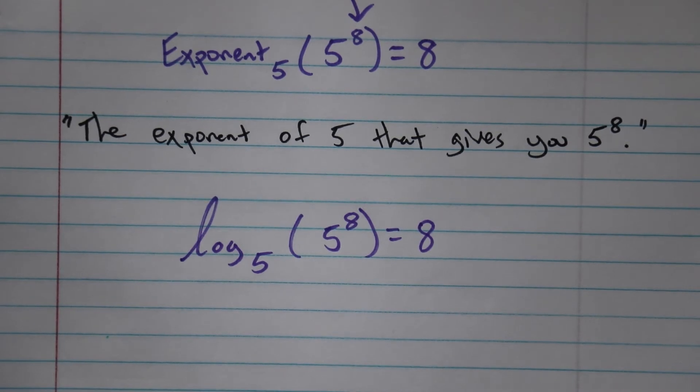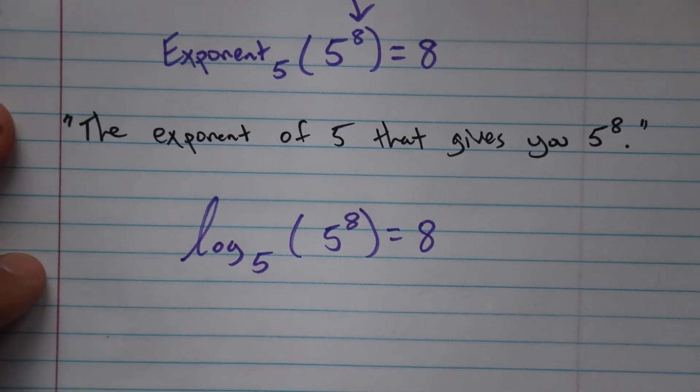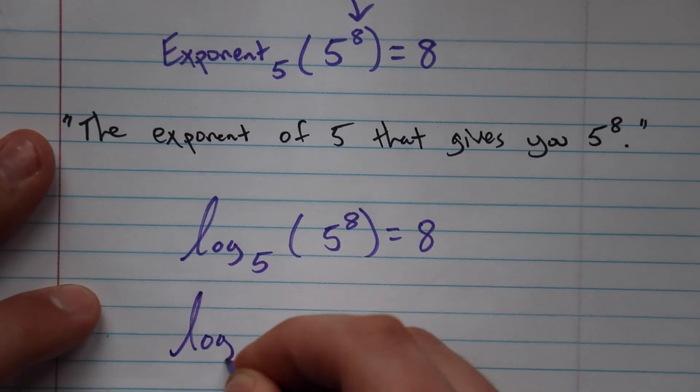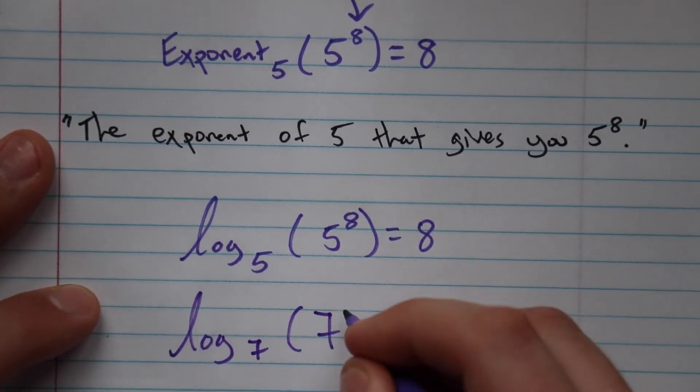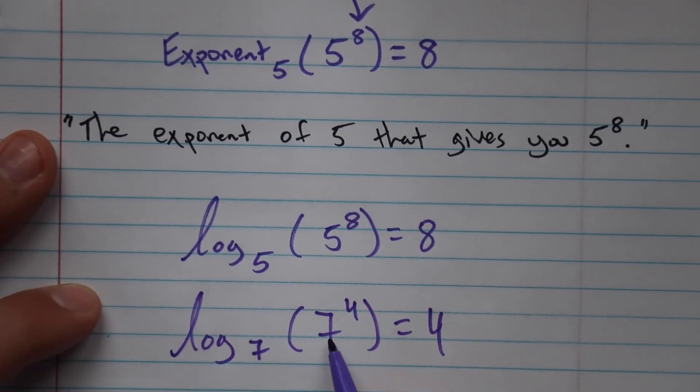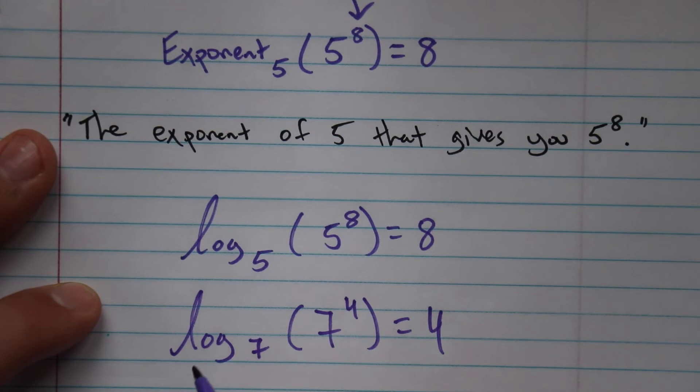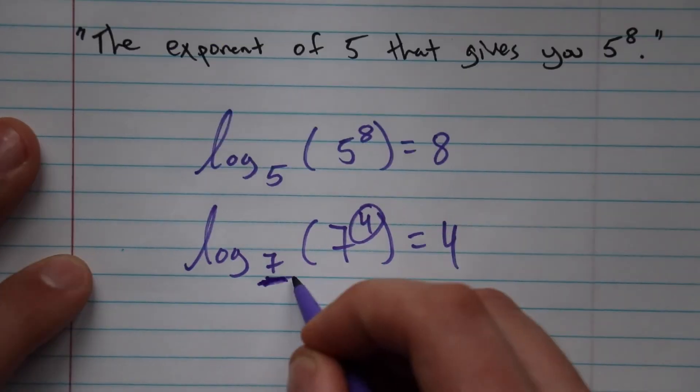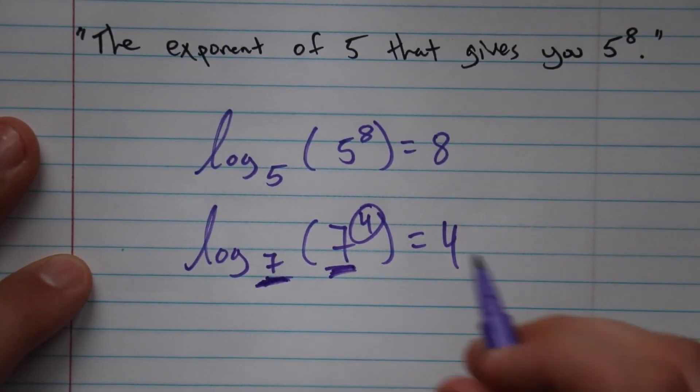So what this would look like is log base 5 of 5 to the 8th equals 8. That's kind of a nice little property of exponents that turns out to be really helpful when we start solving equations using logarithms. For example, log base 7 of 7 to the 4th equals 4. It's the exponent of 7 that gives you 7 to that exponent, so your answer is going to be that exponent, only if these two bases match.